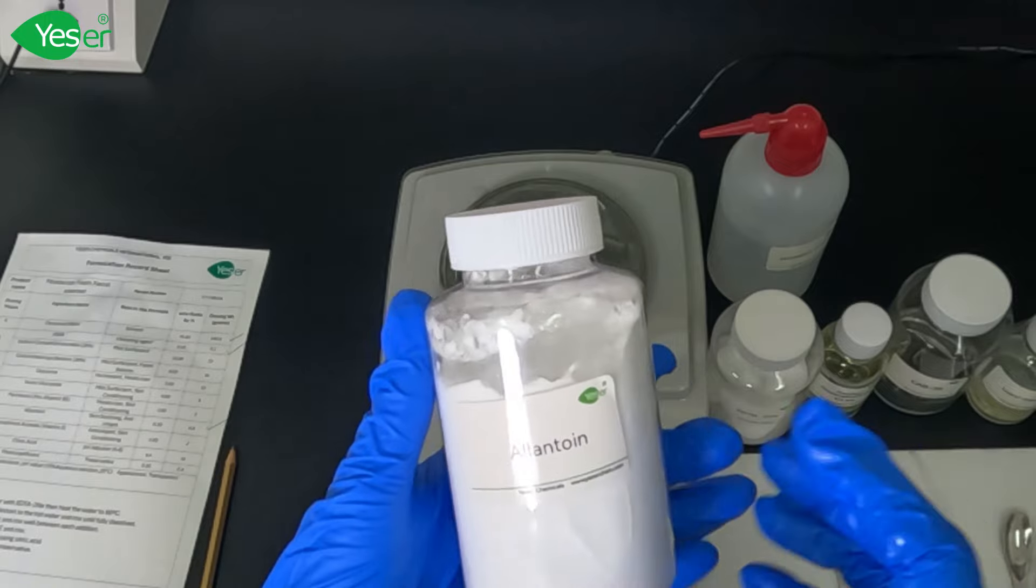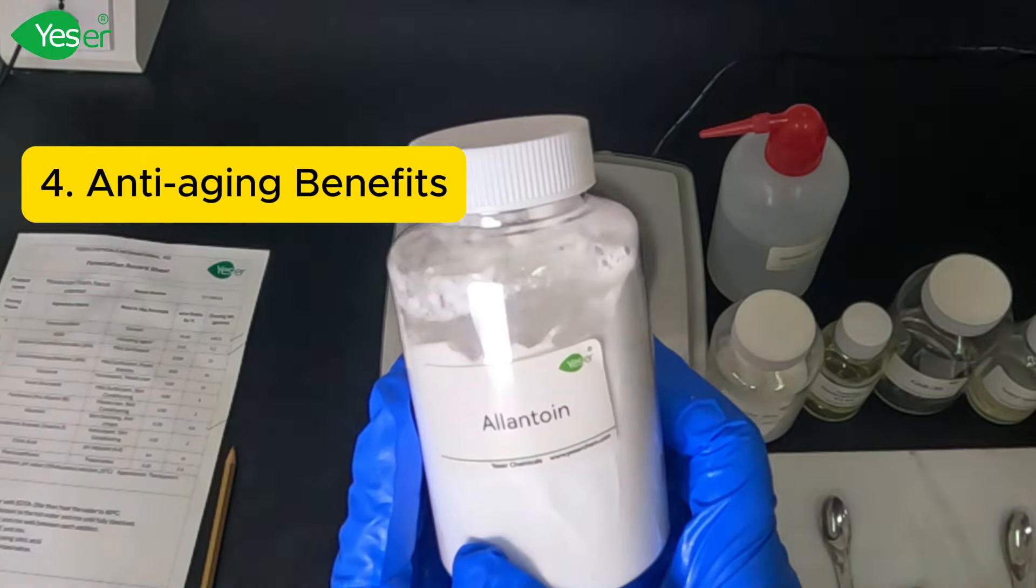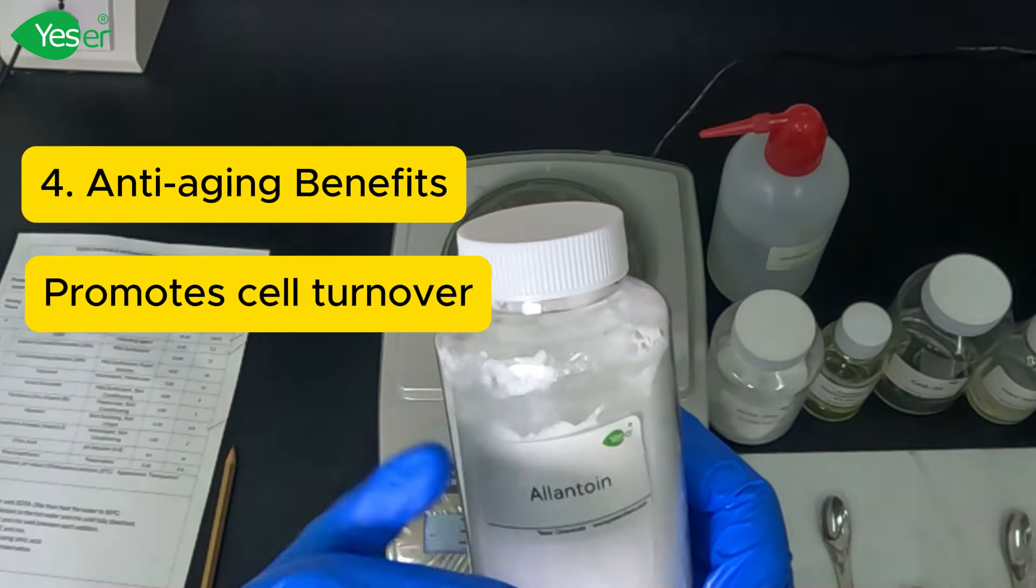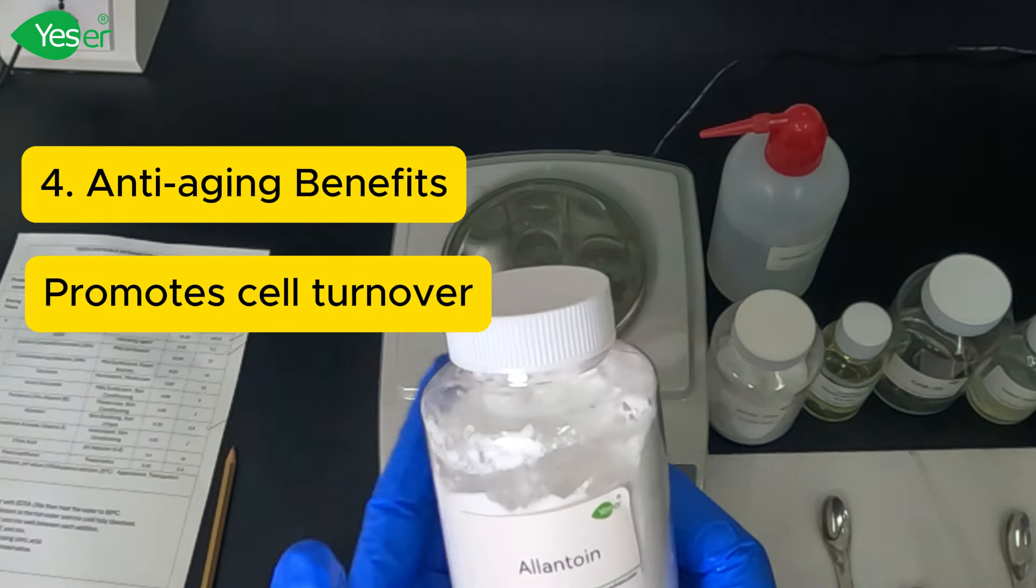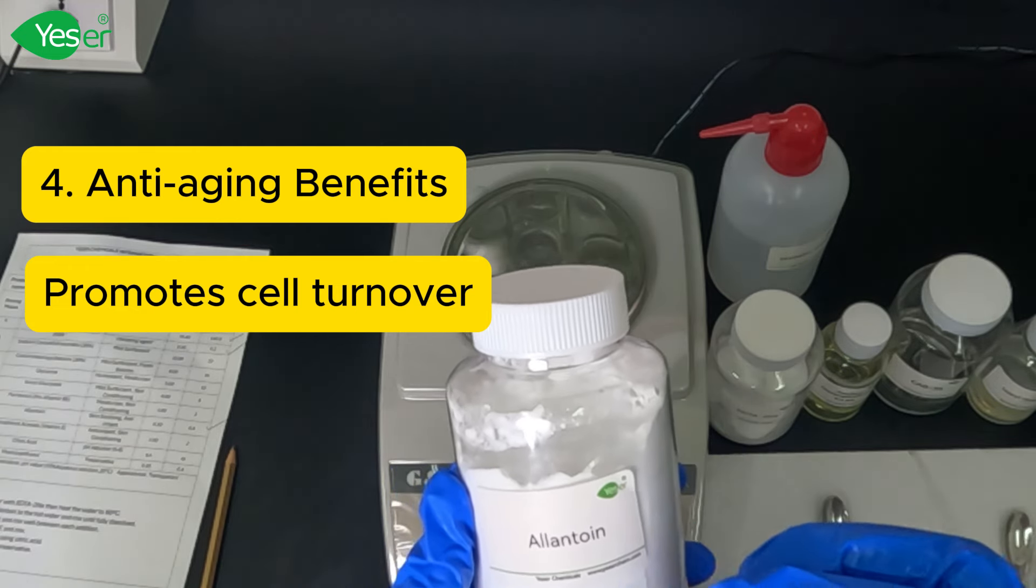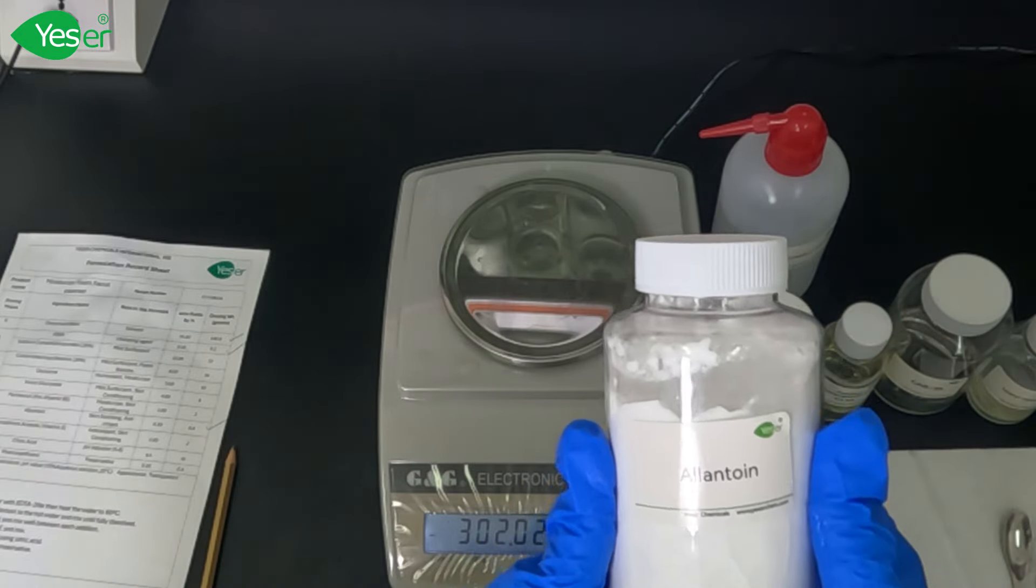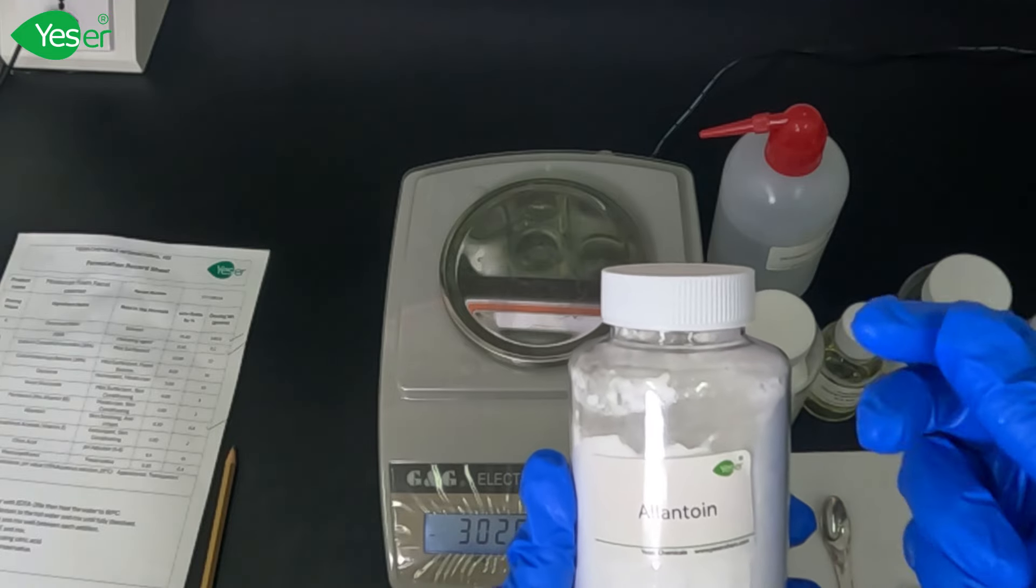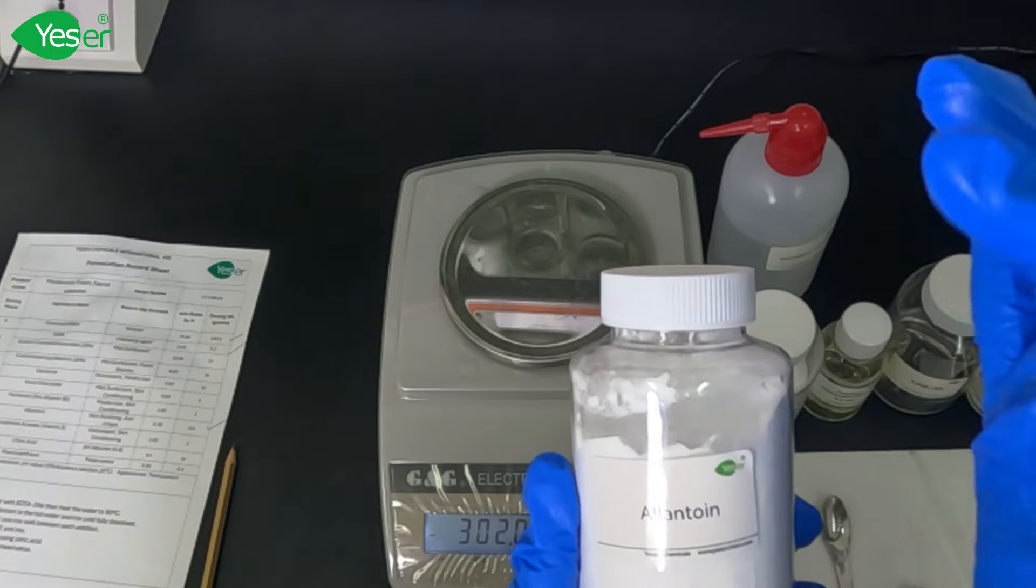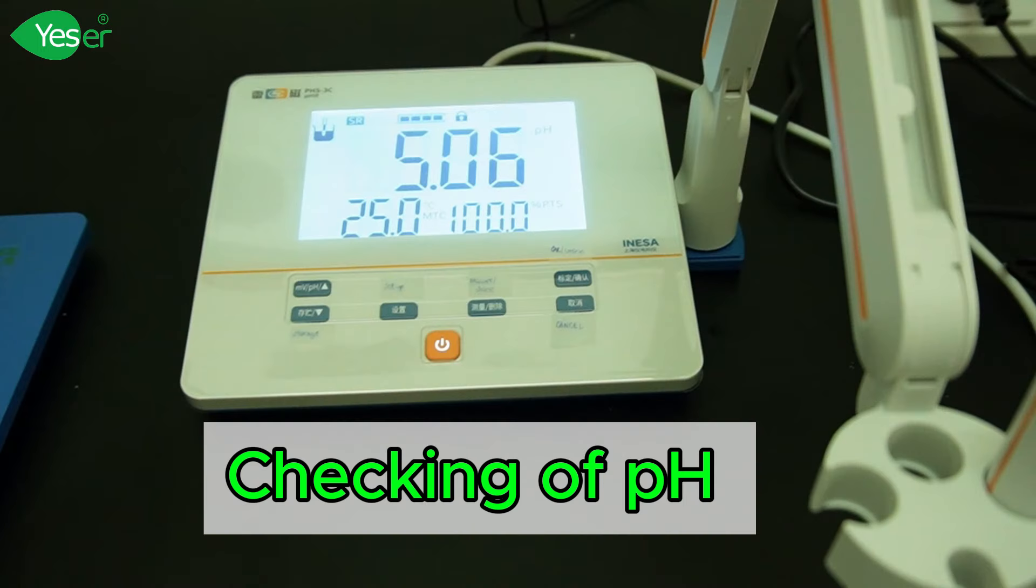The third property is healing properties - promoting skin repair and regeneration by stimulating cell proliferation and supporting the natural healing process. It's often used in products designed to treat minor skin injuries such as cuts or burns. For me, the perfect reason I'm using allantoin today is because of its anti-aging properties. Promoting cell turnover and improving skin texture, allantoin can contribute to anti-aging formulations, helping reduce the appearance of fine lines and wrinkles. Allantoin can also be used in many products such as moisturizers, sunscreens, after-sun products, shampoos and conditioners, lip balms, and of course in our case, facial cleansing.